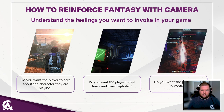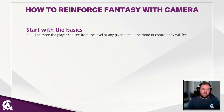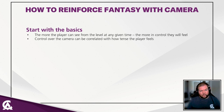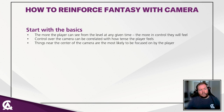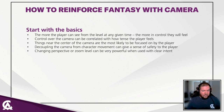Start with the basics: the more the player can see from the level at any given time, the more in control they will feel. Control over the camera can be directly correlated with how tense the player feels — freezing camera movement in a first-person game makes it pretty tense. Things near the center of the camera are much more likely to be focused on by the player. Decoupling the camera from character movement can provide a sense of safety — in third-person shooters, peeking around a corner doesn't require putting your character at risk. Changing perspective or zoom level can be a very powerful tool when used with clear intent.